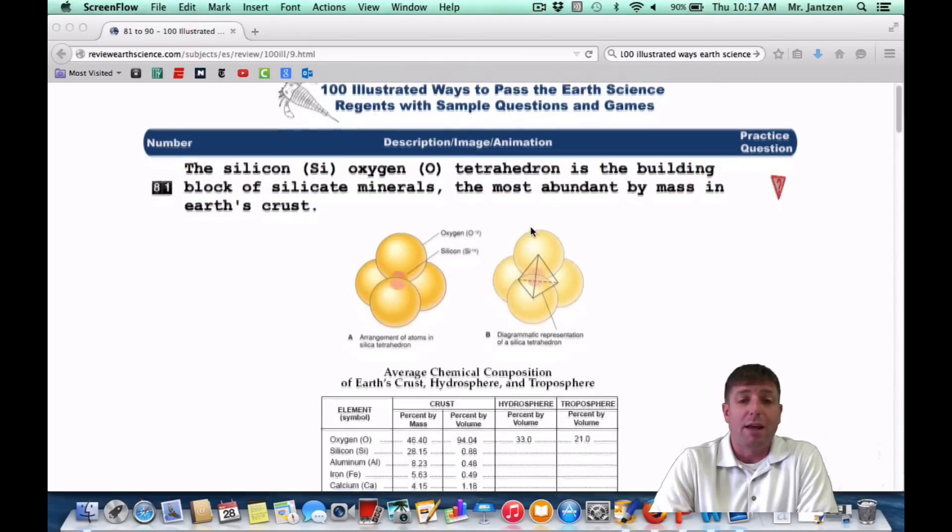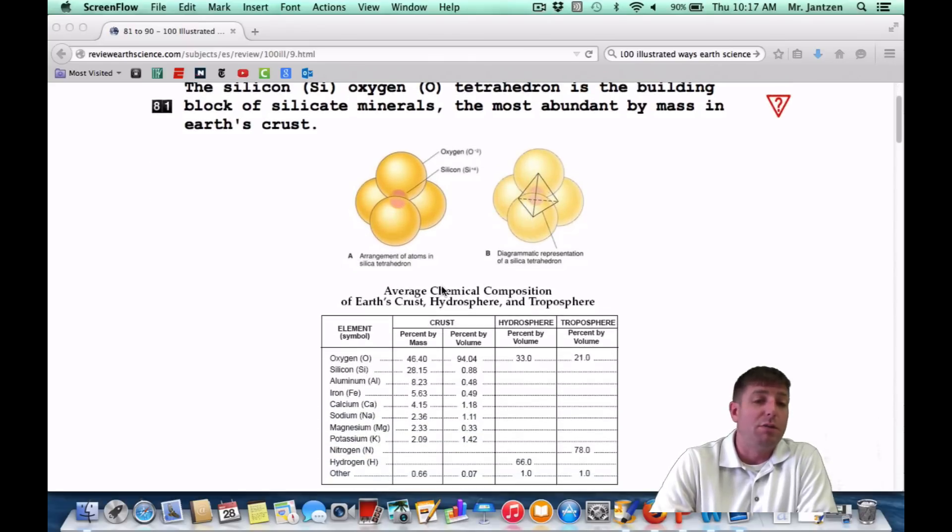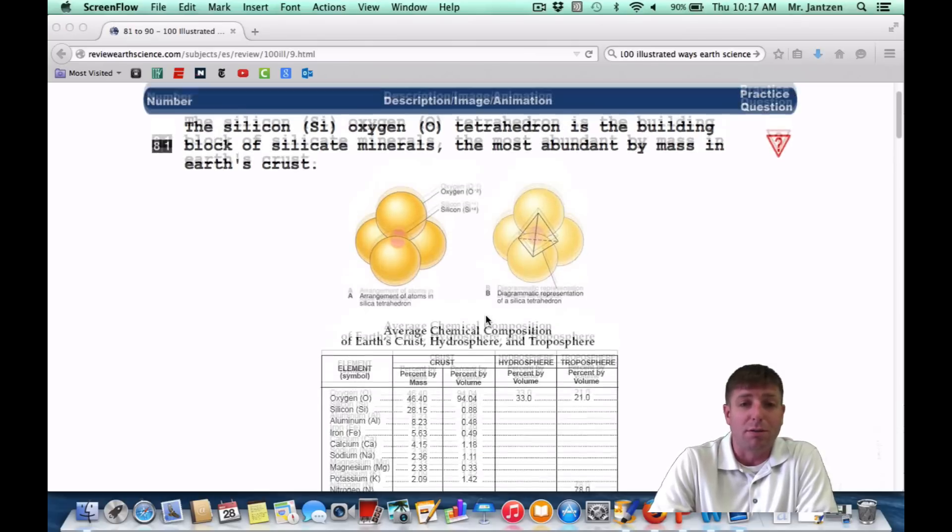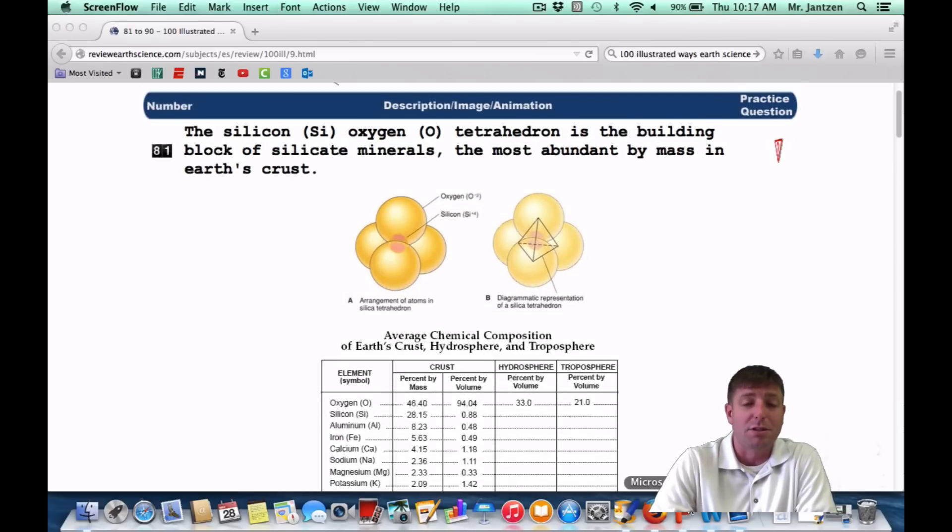That's a mouthful, but it's actually right in your reference tables. If you go to the front page of your reference tables, you have your silicon and you have your oxygen, and they're the most abundant in the crust by mass. It kind of tells you right here, they're the highest numbers.